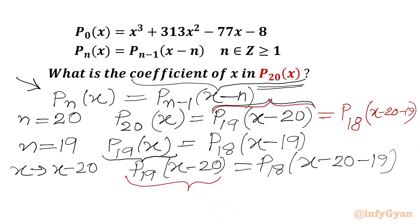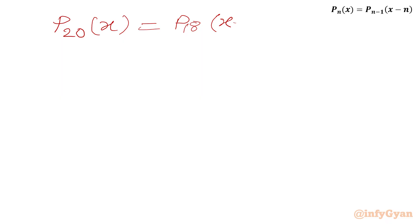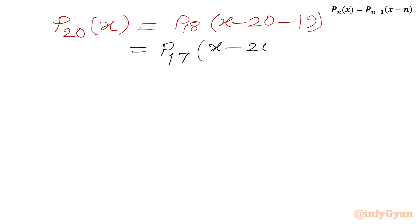Now if we see the pattern: P₂₀(x) = P₁₈(x - 20 - 19). Now we will calculate P₁₈(x), then replace x with (x - 20 - 19), and we will be getting P₁₈(x - 20 - 19) = P₁₆(x - 20 - 19 - 19).